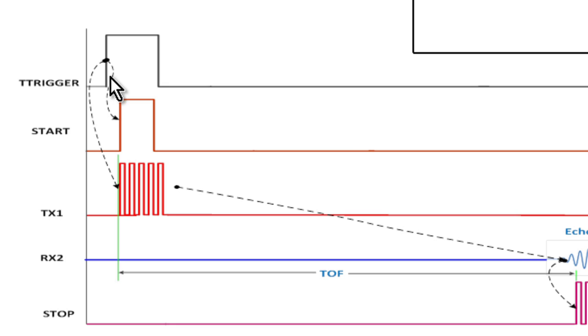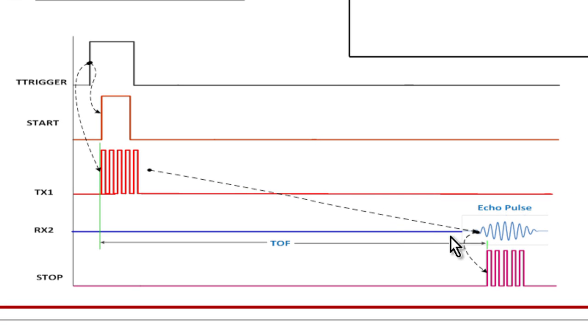It gets a trigger signal that starts the process. It creates a start signal. It excites this first transducer, receives the echo, and turns that echo into stop pulses.